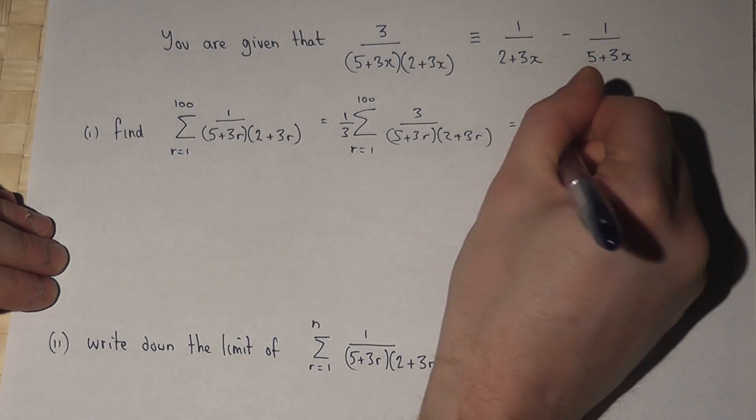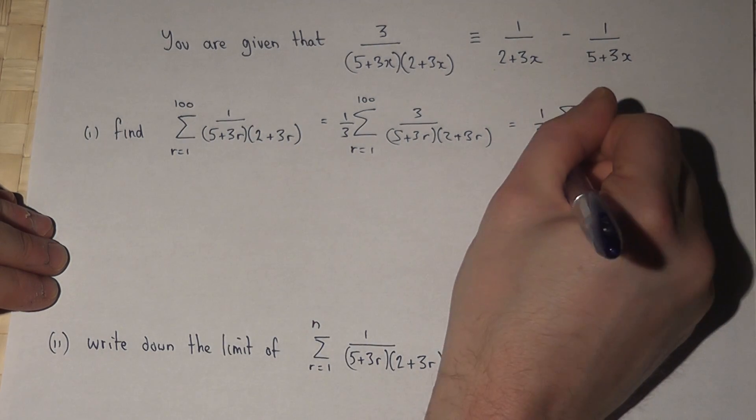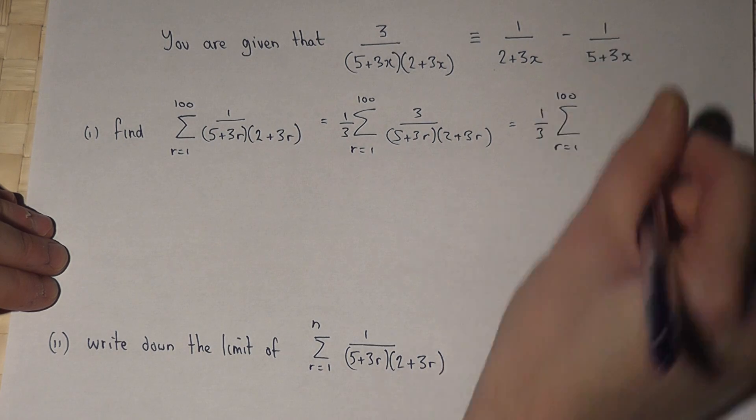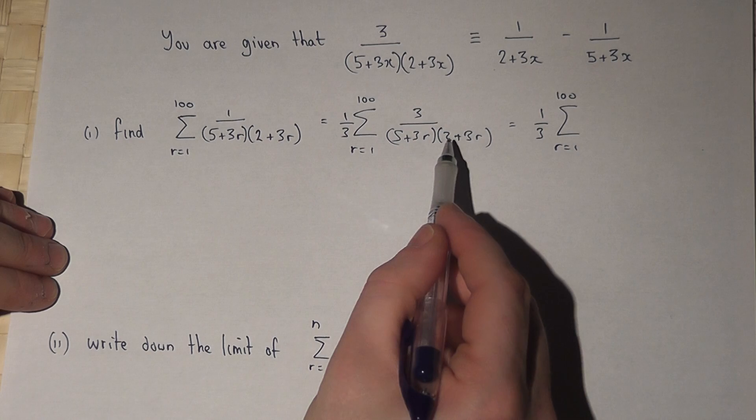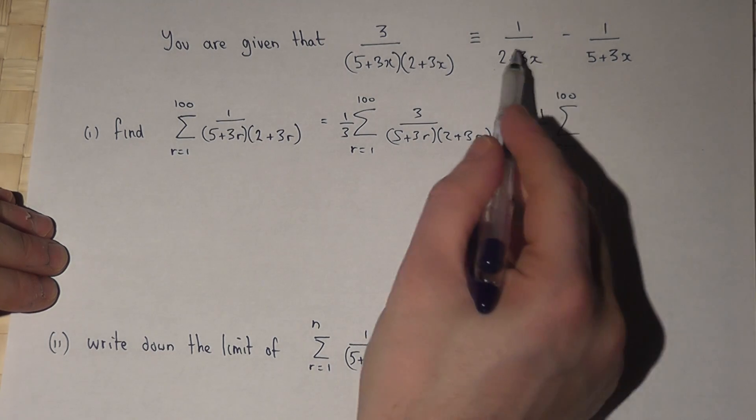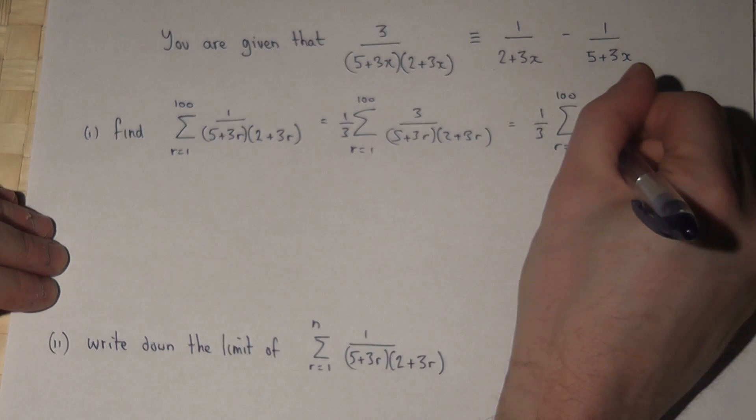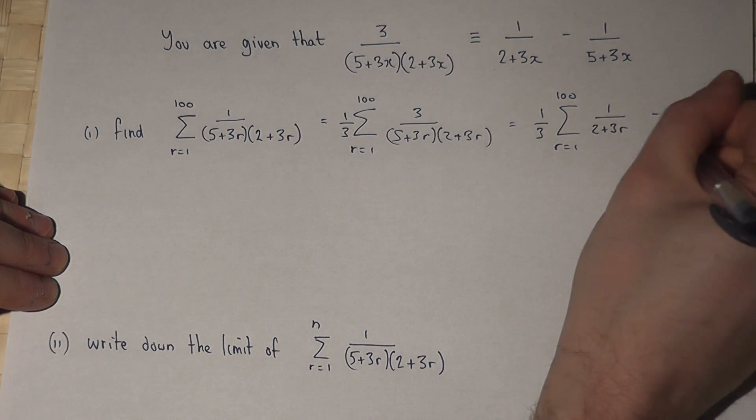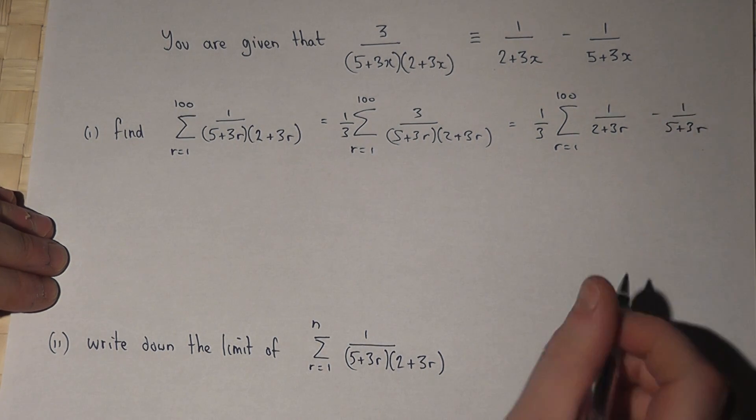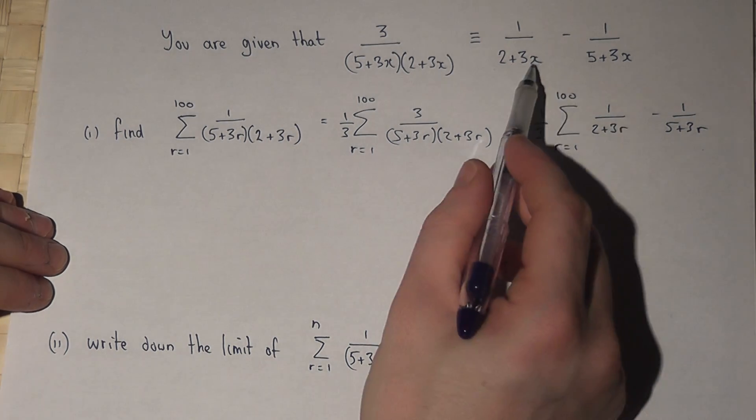I can then replace the part in the summation by the given result. So 3 over 5 plus 3r times 2 plus 3r must equal 1 over 2 plus 3r minus 1 over 5 plus 3r. So we now have an r rather than an x.